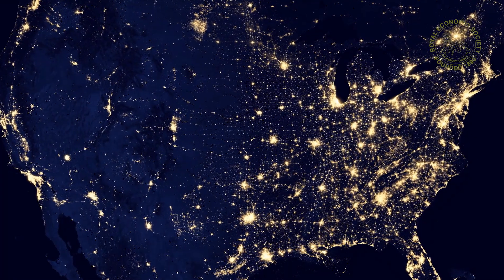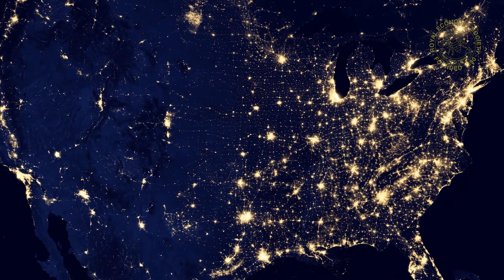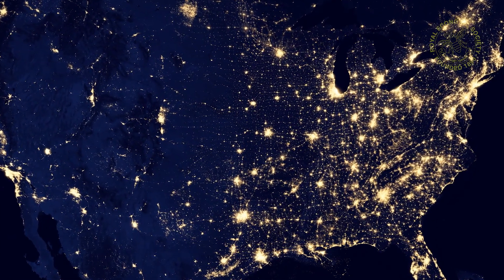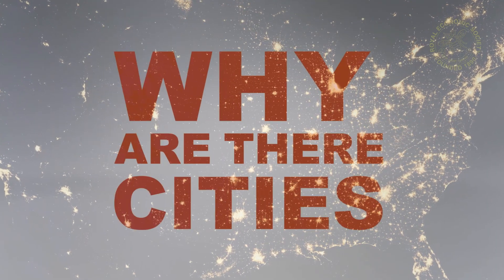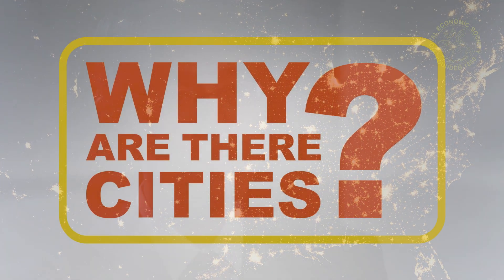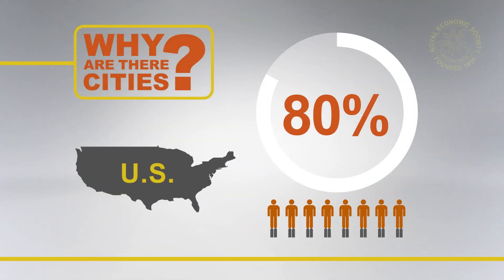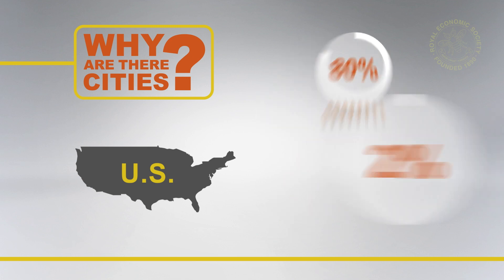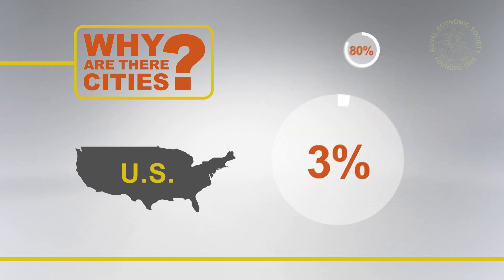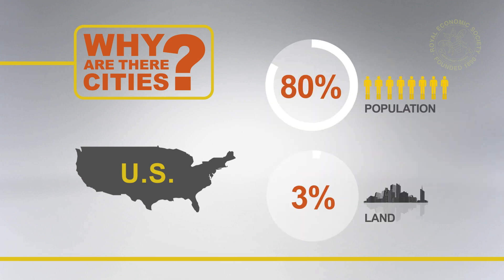One fundamental question in urban economics or any urban theory is why are there cities? In the U.S., more than 80% of the population lives in urban areas, whereas these urban areas only account for 3% of the land. So there must be benefits for people to get together, but then what are they?